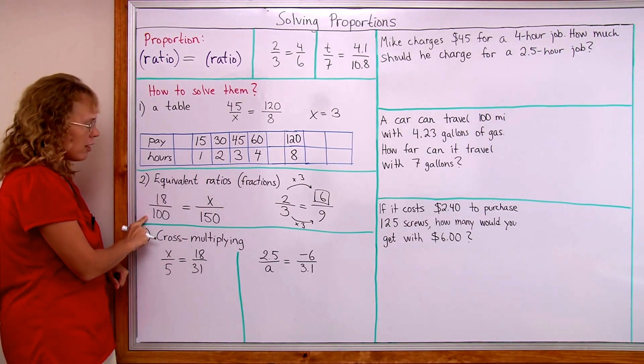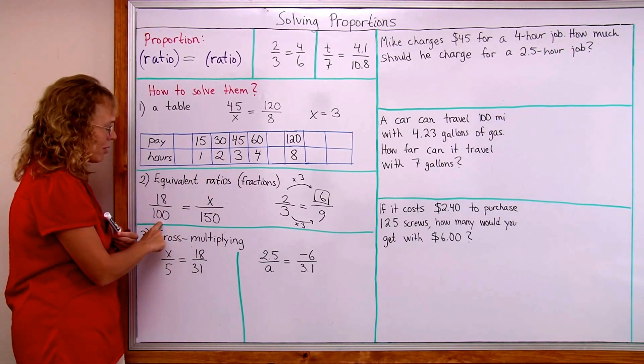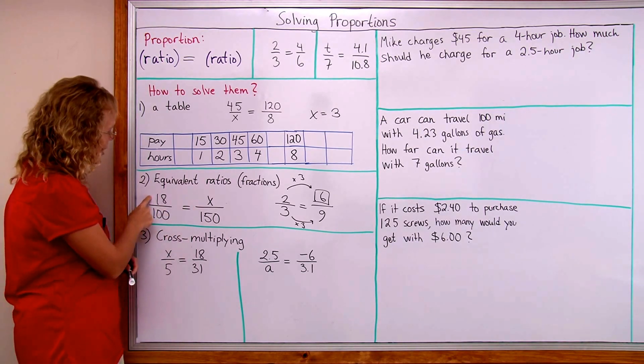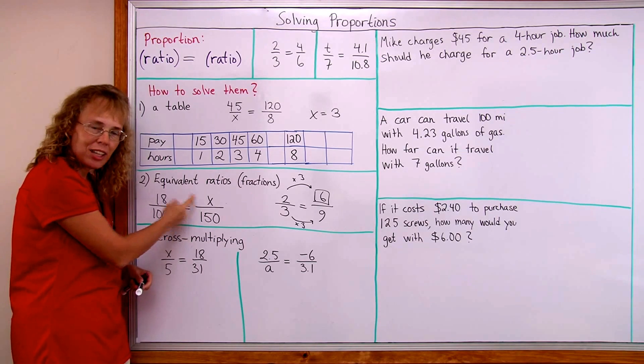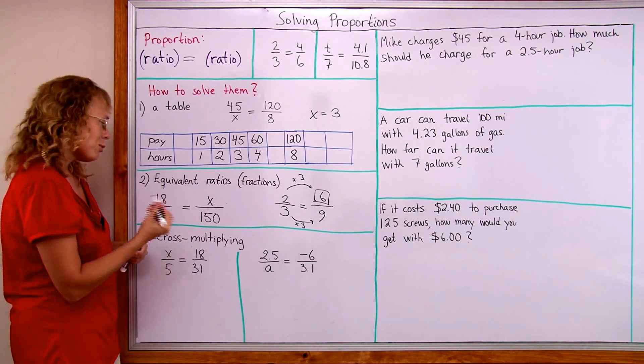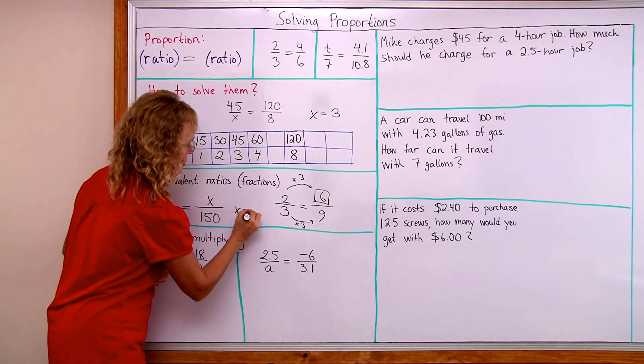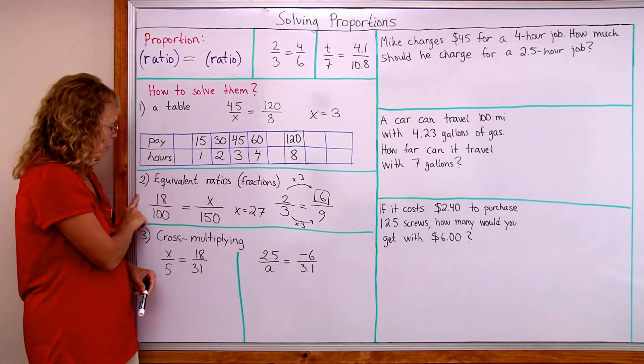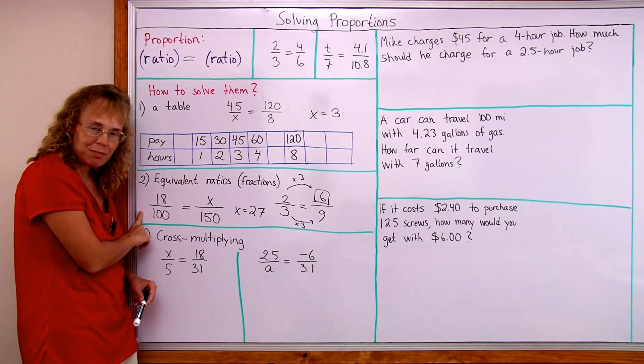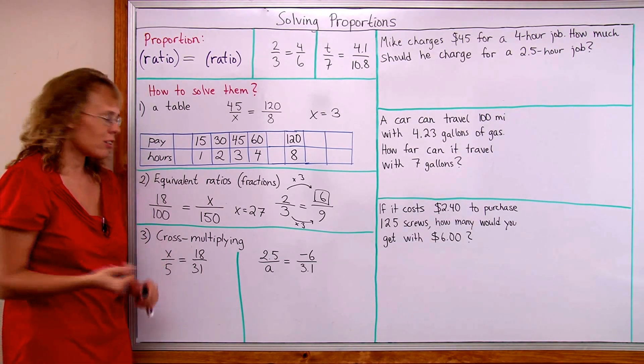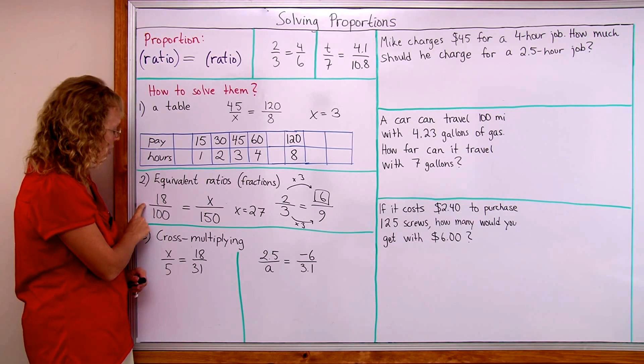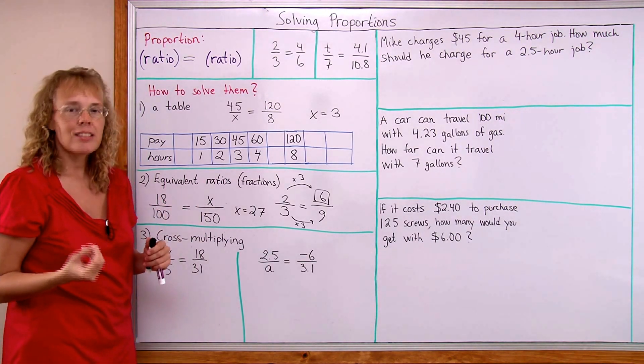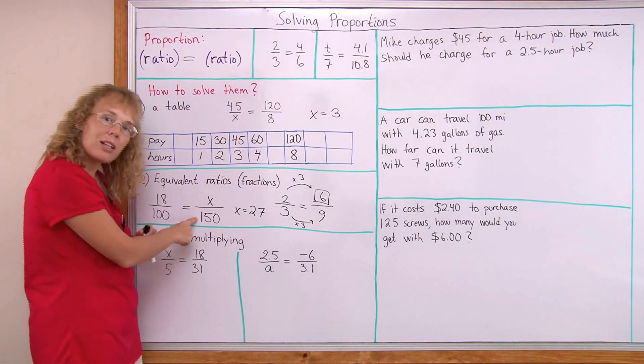So over here I have 100 and 150. So I can see this number 1.5 times is 150. So I take this number 1.5 times to put here in place of X, right? And so that would be 27. This could be for example, let's say we are told that 18 people out of 100 do something, get the flu each year or something. 18 people out of 100. That's a ratio. And then we are asked, so how many people would you expect to get the flu in a group of 150 people?